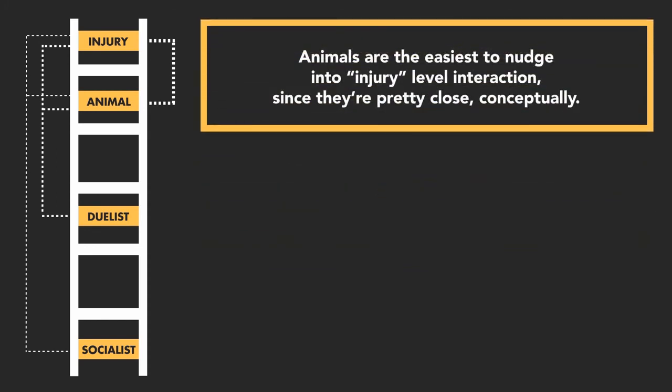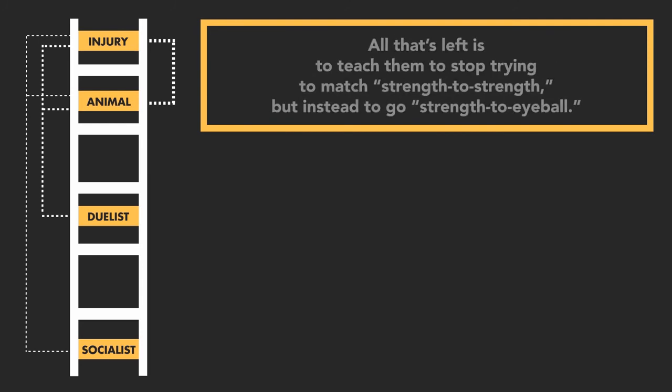Animals are the easiest to nudge into injury level interaction since they're pretty close conceptually. All that's left is to teach them to stop trying to match strength to strength, but instead to go strength to eyeball.